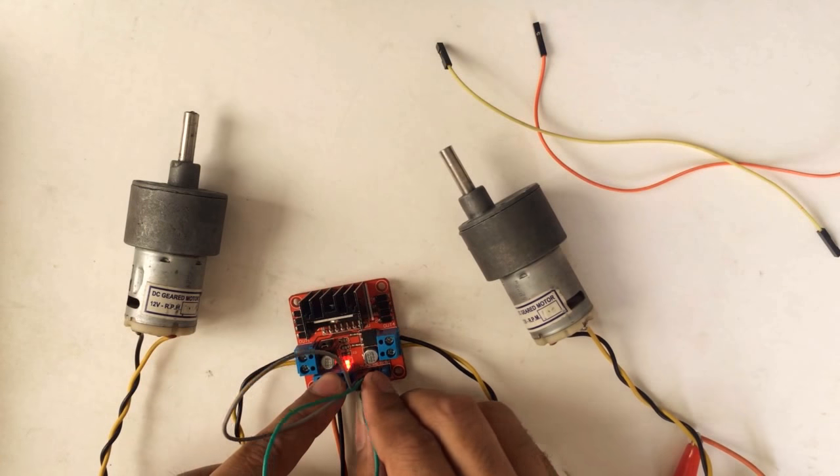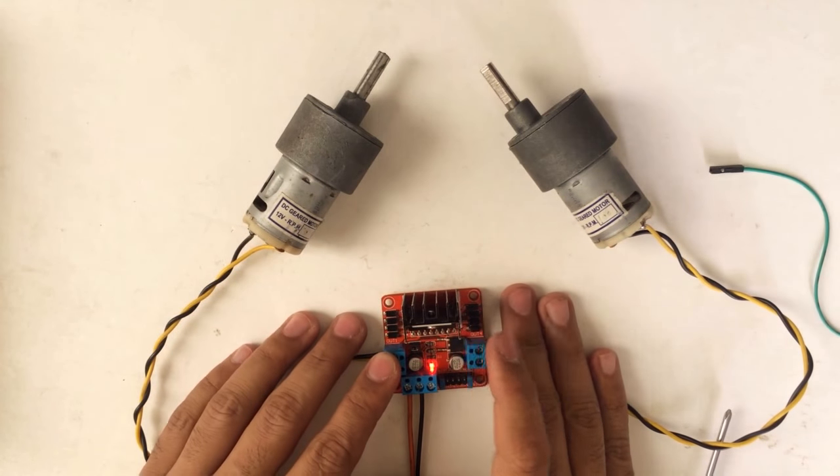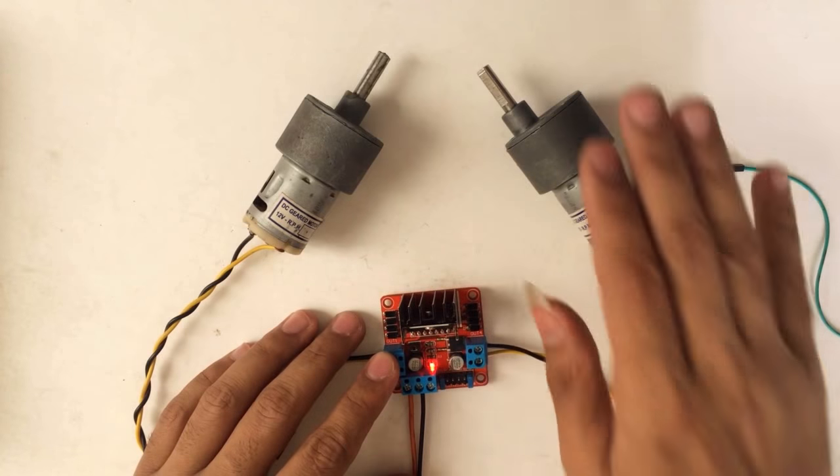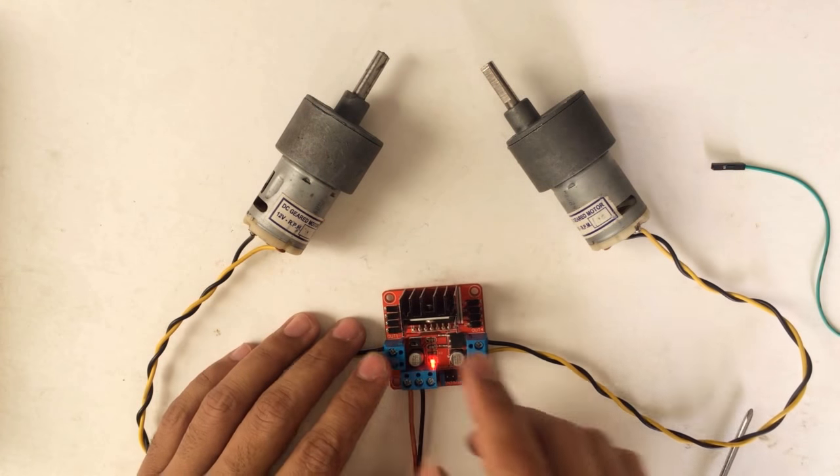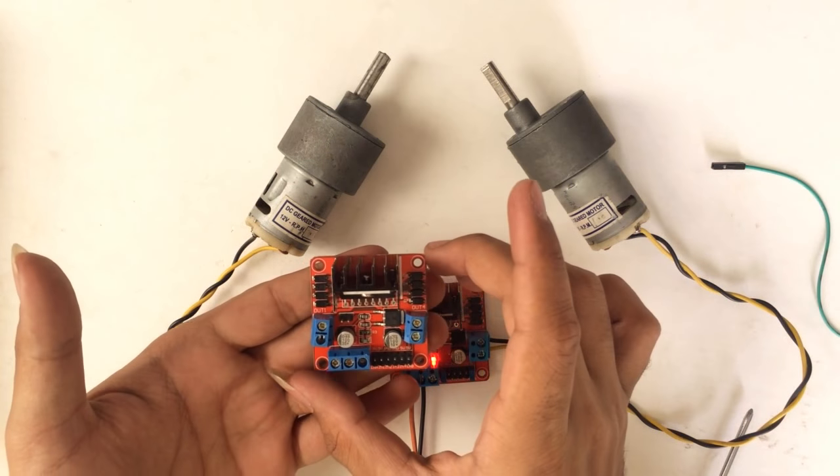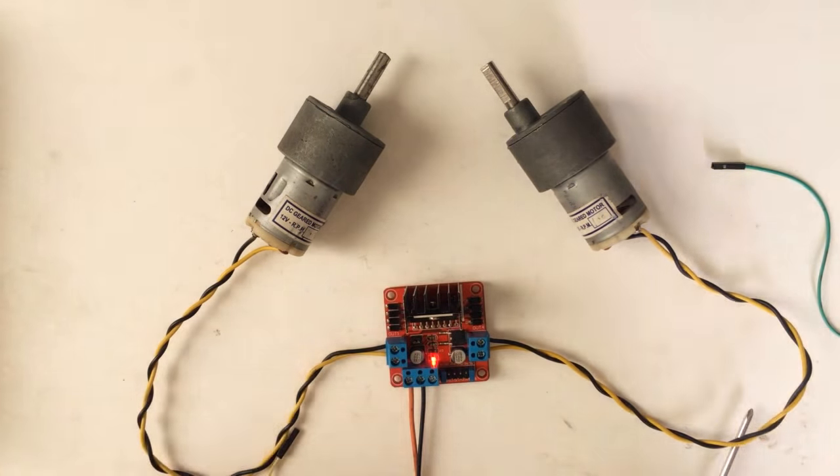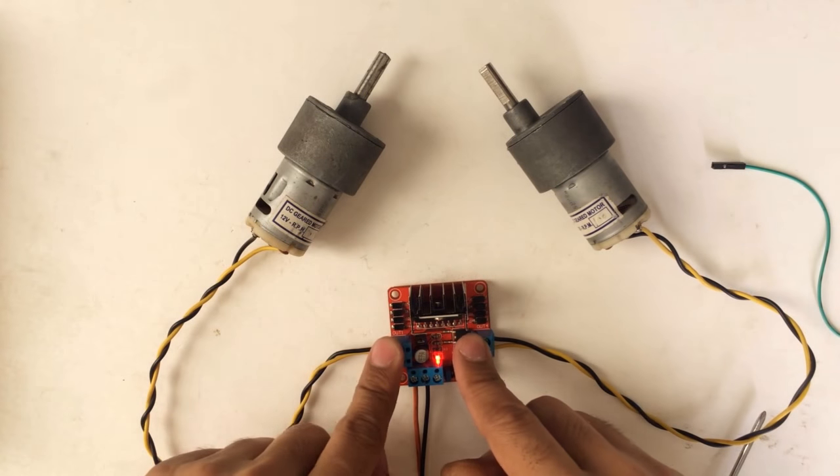This means the half part of this motor driver L298N is working, that is Motor B, and the half for Motor A this side isn't working. So we'll be replacing this and use another L298 module, and with this we'll have another video repairing this board.